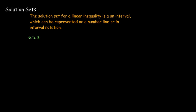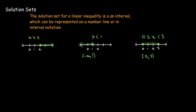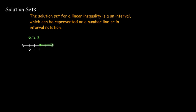Let's look at some simple inequalities. x is greater than or equal to 2. On the number line, greater than means to the right, so we start at 2 and everything to the right of 2 is in the solution set. Since we have the 'equals to' part, 2 is also part of the solution set, and on the number line we represent that with a solid dot or solid circle.